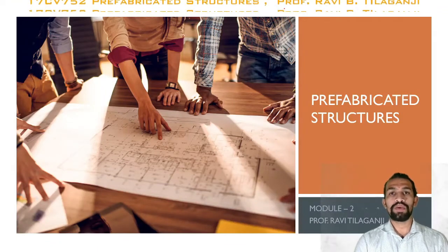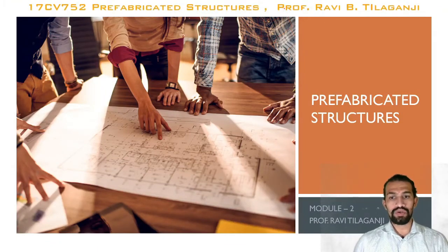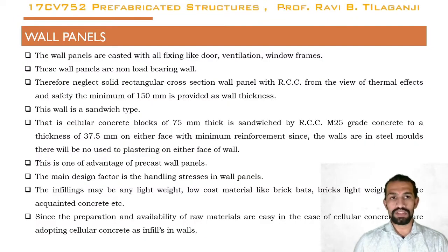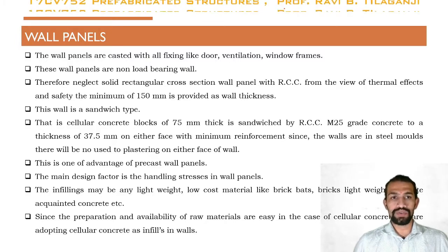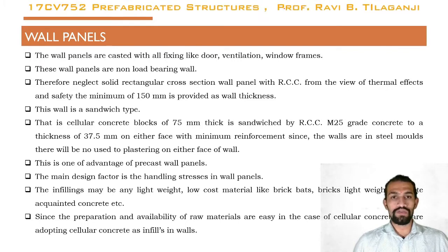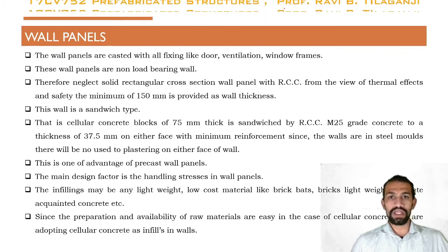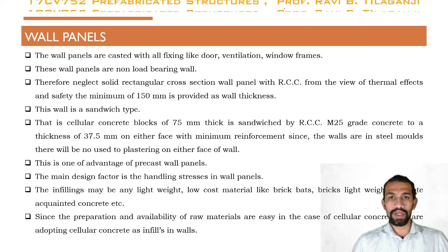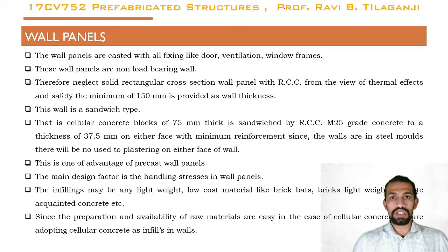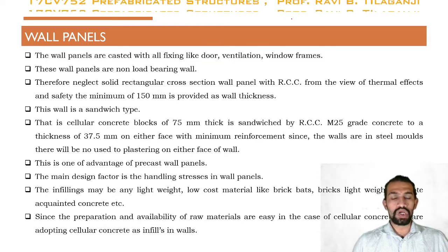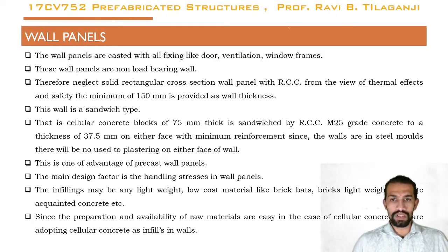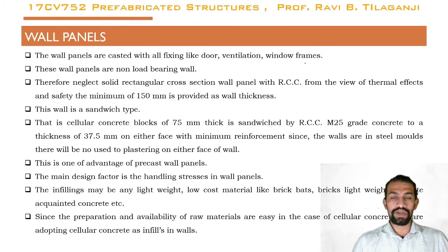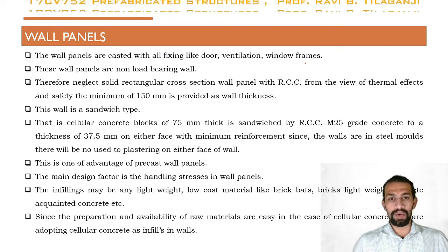Welcome to prefabricated structures module 2, covering wall panels. Wall panels are casted with all fixings like doors, ventilation, and window frames. The wall panels are non-load bearing walls, therefore these neglect solid rectangular cross-section wall panels with RCC. From the view of thermal effects and safety, the minimum of 150 mm thickness is provided.